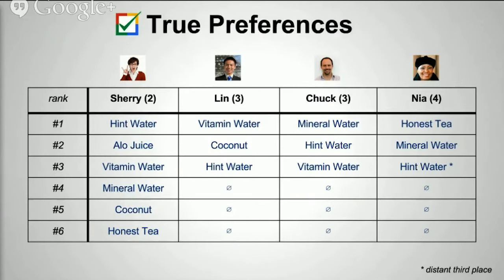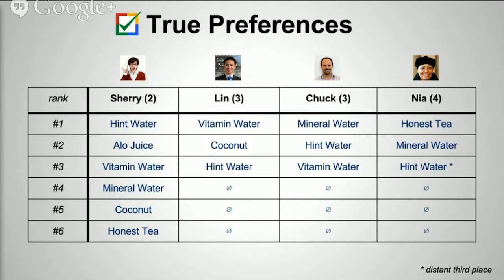We'll start by looking at everybody's true preferences. Sherry has opinions on all six items and ranks them in order — water before aloe juice, et cetera. Lynn and Chuck have opinions on their top three favorites; the other three are equivalent, basically zero. Nia has opinions on her top two choices, and then a distant third choice. She'll take Hint Water above the other three, but not by much — she doesn't really like Hint Water. That will play out as we go forward.